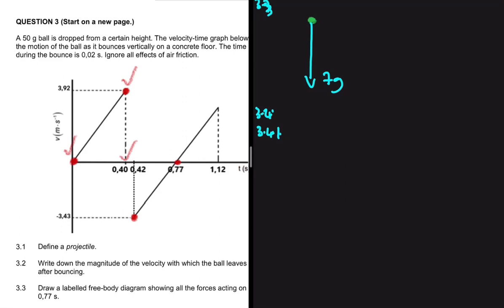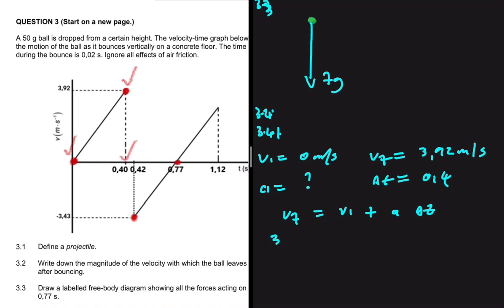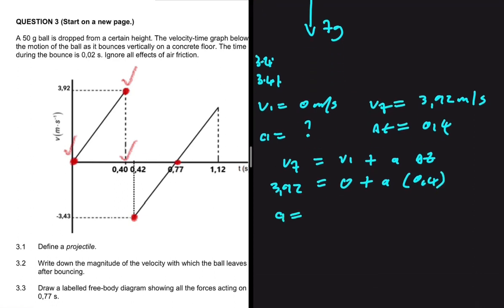Using equations of motion: vi equals zero meters per second because the ball was dropped, and vf equals 3.92 meters per second at the velocity when it strikes the ground. The time for that motion is 0.4 seconds. Using vf = vi + a·Δt, we get 3.92 = 0 + a × 0.4, so a = 3.92 ÷ 0.4 = 9.8 meters per second squared.